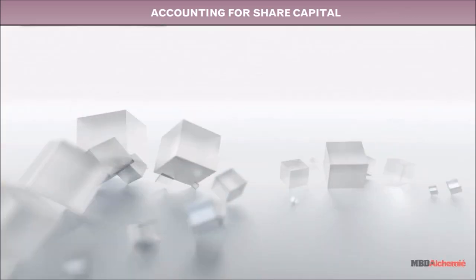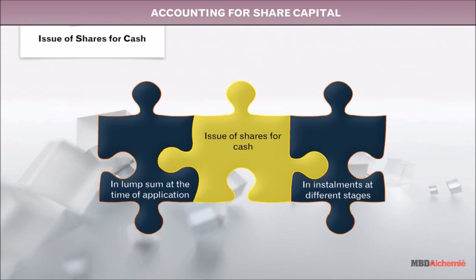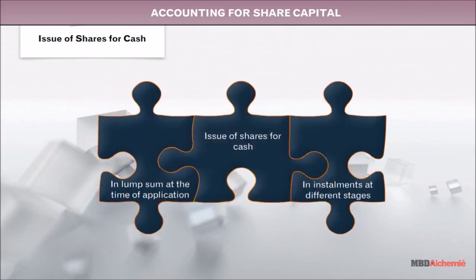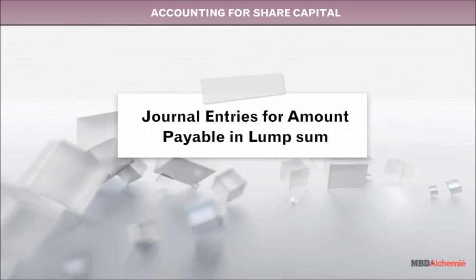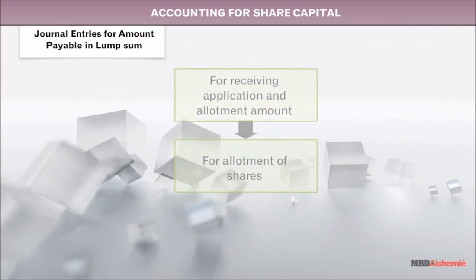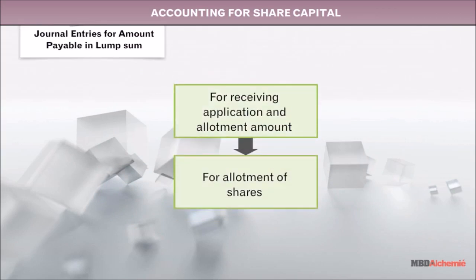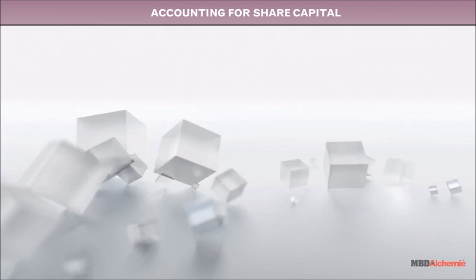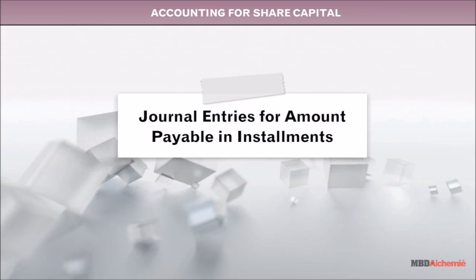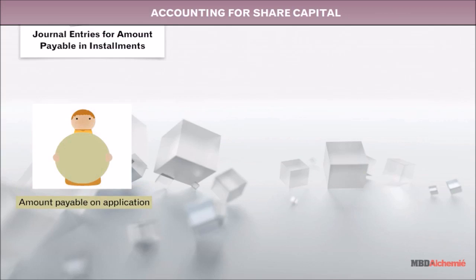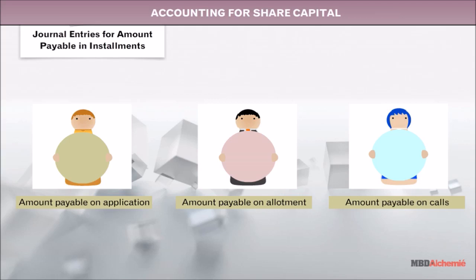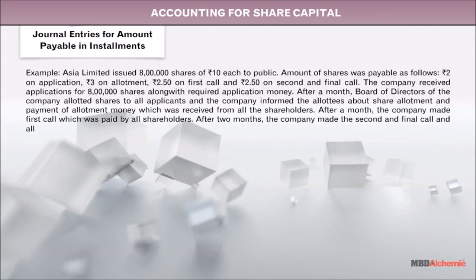Issue of Shares for Cash involves issuing shares against receipt of cash from the applicants to whom shares are allotted. The amount of issue is either paid in lump sum or in installments. Journal Entries for Amount Payable in Lump Sum: for receiving application and allotment amount, and for allotment of shares. For Amount Payable in Installments, the amount is payable on Application, Allotment, and Calls.